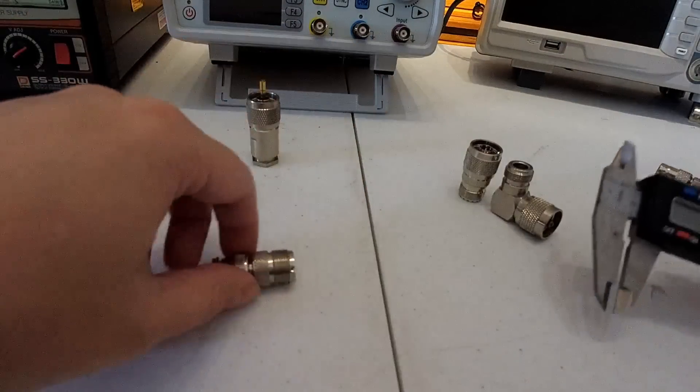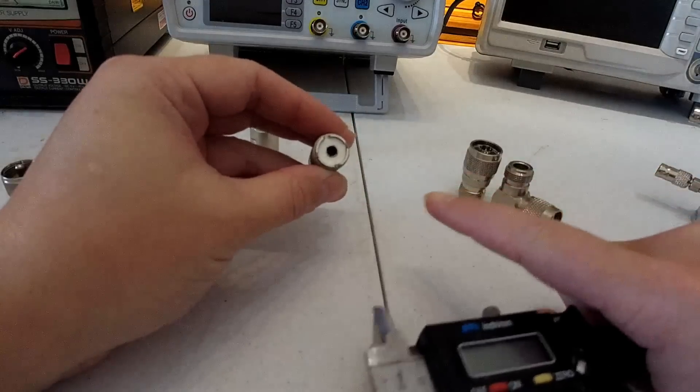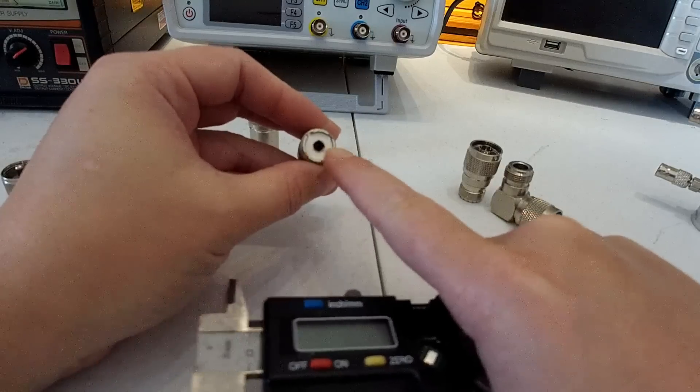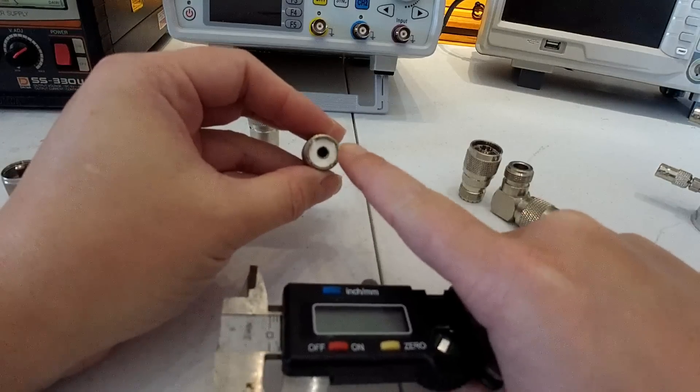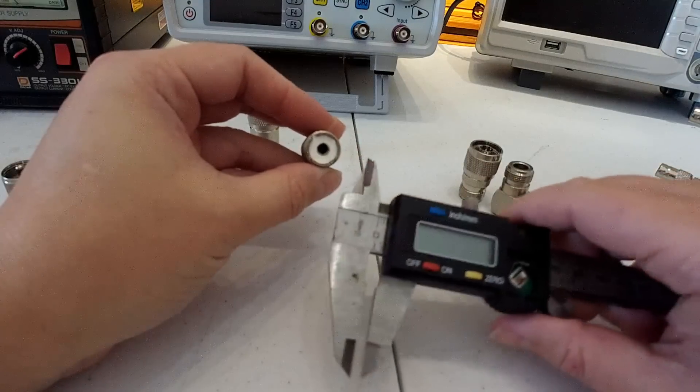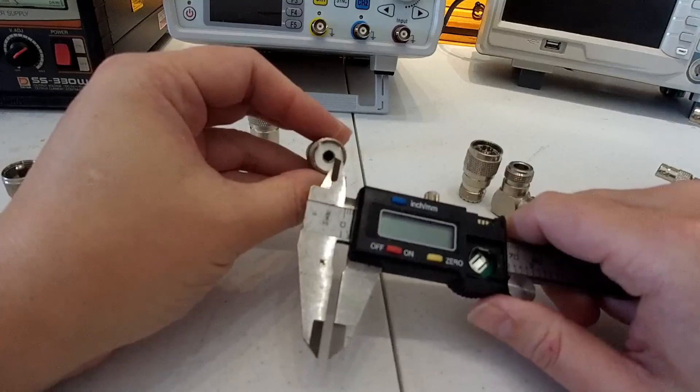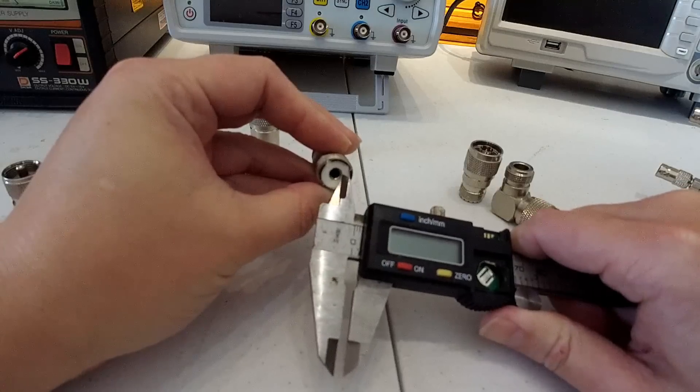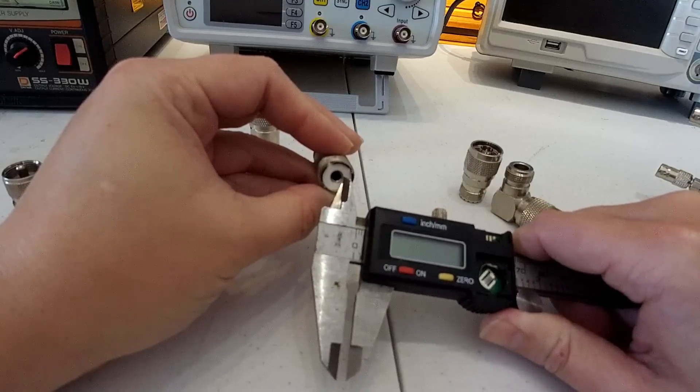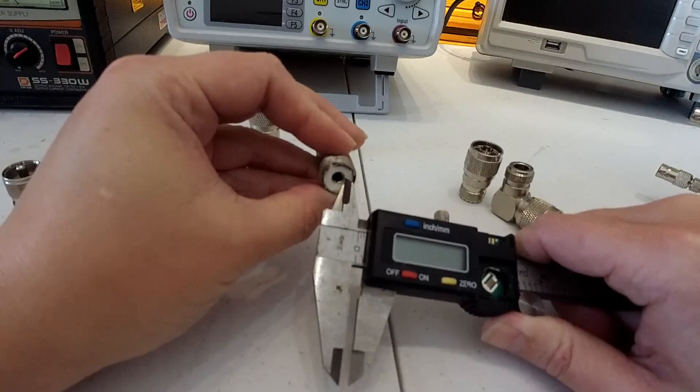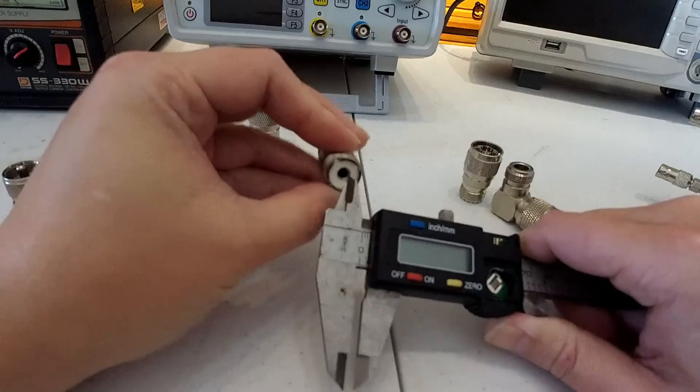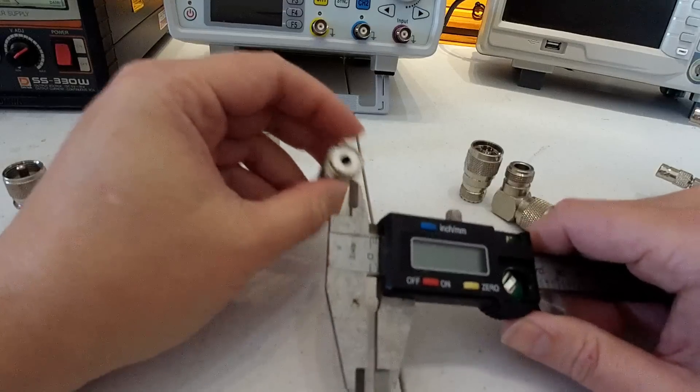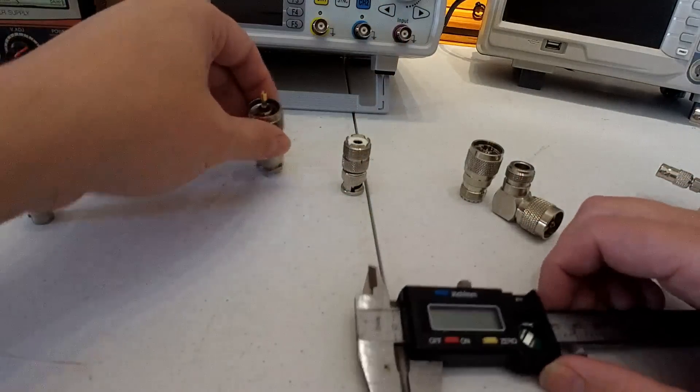If we look at an SO239, the voltage breakdown is defined by the distance between the inner conductor and the outer shield or outer conductor. That's true for all coaxial connectors and cables. In this case, the distance - excuse my much used calipers - we've got about three millimeters between the outside and the center, and that's just over one hundredth of an inch.